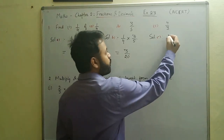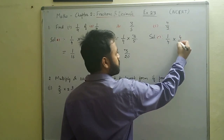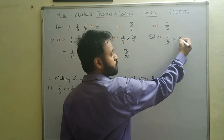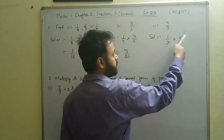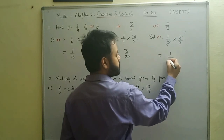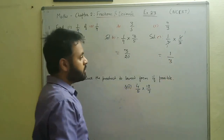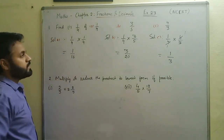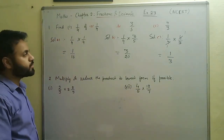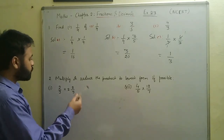In part c, we have to find one fourth of four by three. Here we can cancel out the two fours, leaving one times one over one times three, which equals one by three. This is the final answer. You can try the second part of question one by yourself. Let's now move on to question number two.